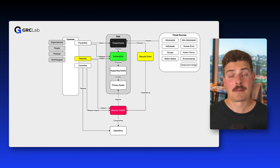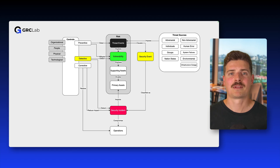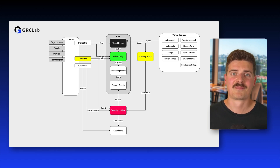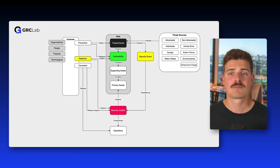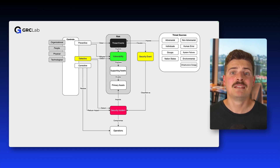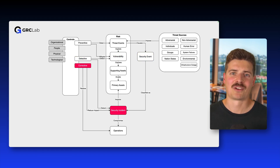Detective controls help you notice when something suspicious is happening. They don't stop the threat, but they give you a chance to react. An intrusion detection system, for example, might alert an admin about unusual network activity, giving the team time to investigate and respond.